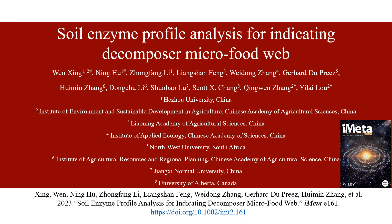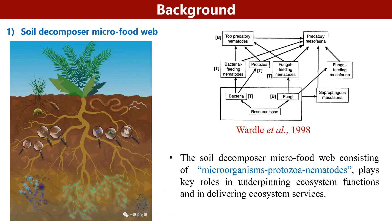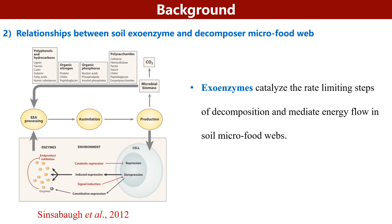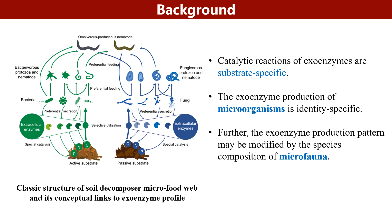In this work, we focused on the soil enzyme profile analysis for indicating the decomposer micro-food web. The soil decomposer micro-food web consists of microorganisms, protists, and nematodes that play key roles in underpinning ecosystem functions and in delivering ecosystem services. Exoenzymes catalyse the rate-limiting steps of decomposition and mediate energy flow in the soil micro-food web. The catalytic reactions of enzymes are substrate specific, and the enzyme production of microorganisms is identity specific. Further, the enzyme production pattern may be modified by the species composition of microbiota.